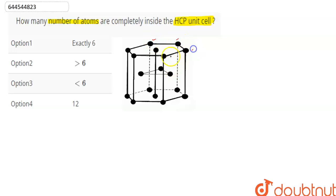First of all, in HCP unit cell we have total one, two, three, four, five, six, seven, eight, nine, ten, eleven and twelve—total twelve atoms on the corner of HCP unit cell.